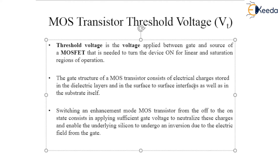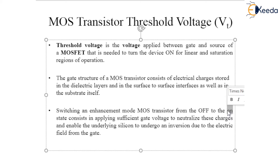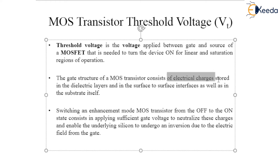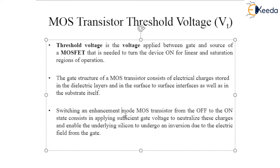All these charges will make the device reach a threshold point, switching an enhancement mode Metal Oxide Semiconductor Field Effect Transistor from the OFF to ON state. In order to turn on the MOSFET in enhancement mode, it consists of applying sufficient gate voltage to neutralize these electrical charges stored in the dielectric layers, surface-to-surface interfaces, as well as the substrate itself.